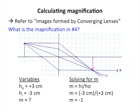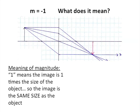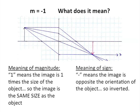What does a negative 1 mean? The magnitude here is 1, which means the image is 1 times the size of the object — so the image is the same size as the object. The negative sign in the magnification means the image is opposite the orientation of the object. Since the object was upright, the negative sign means it got flipped, so the image is inverted.